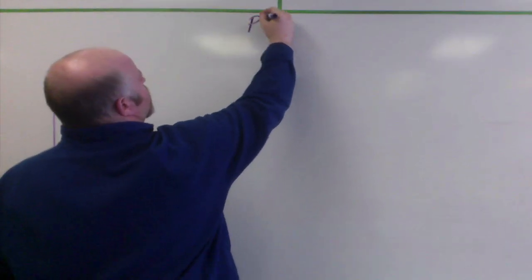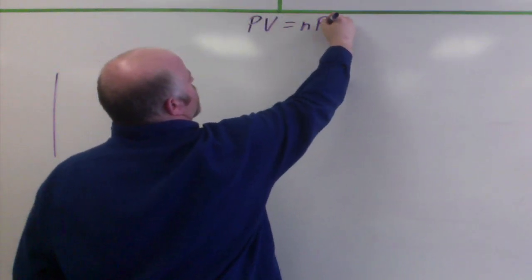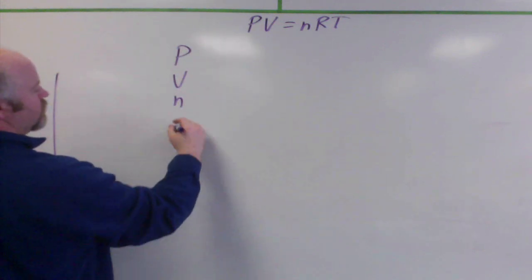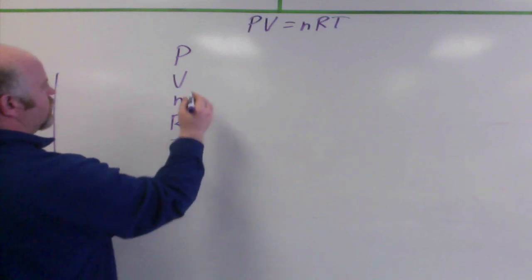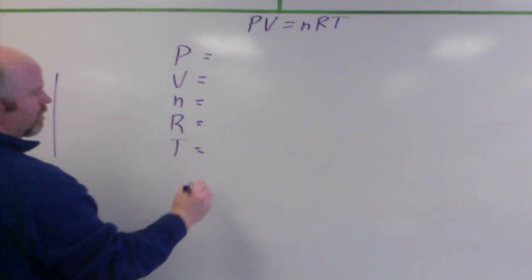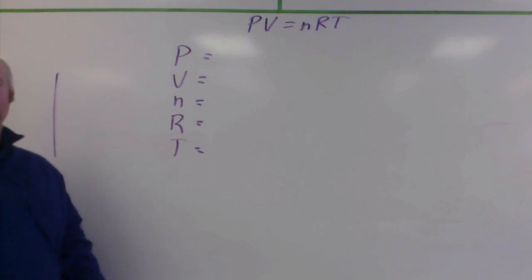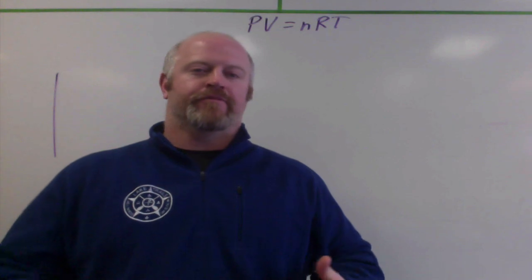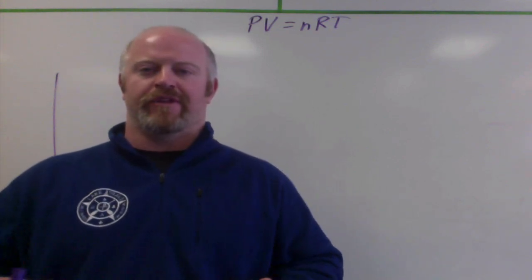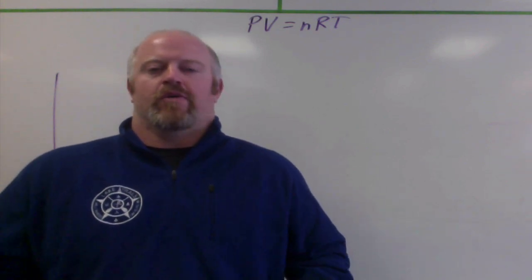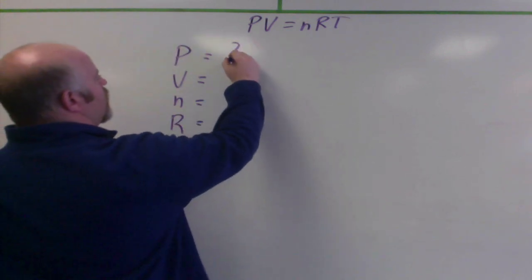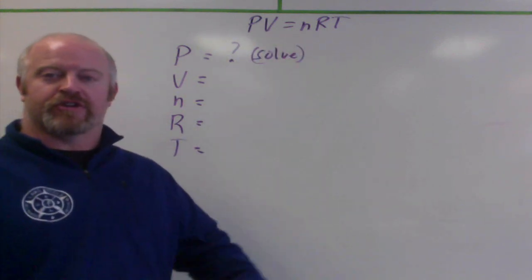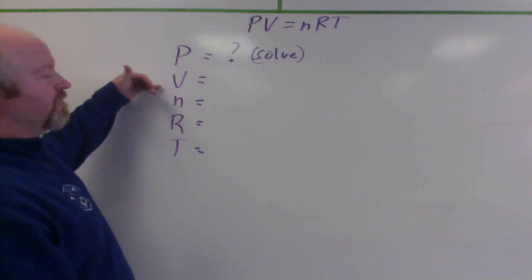Ideal gas law is PV equals NRT. So we need to have a pressure, a volume, number of moles, R, and T. These are all the possible variables we have in this problem. So if we go into our problem, we say we have a pressure. So we're looking in there, we have grams, we have carbon dioxide, we have milliliters, we have Celsius. We don't have a pressure. Oh, that's going to be our question. So we're actually going to solve for the pressure. That's what we're going to solve for in this problem.